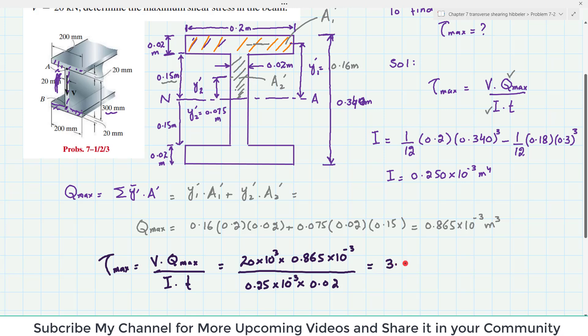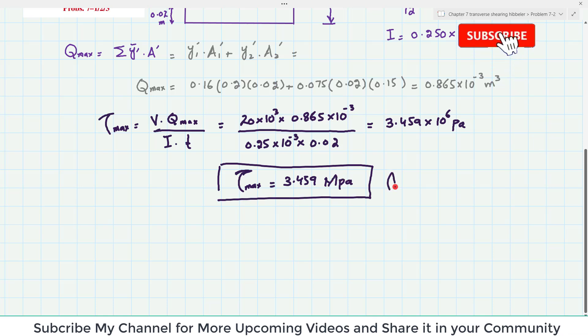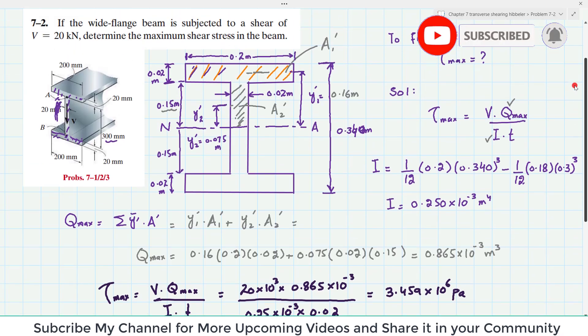So when you calculate it, it will become 3.459 into 10 raised power 6 Pascal or simply you can say that maximum shearing stress tau is equal to 3.459 mega Pascal or 3.46 mega Pascal. So this is the answer of our question number 7-2.